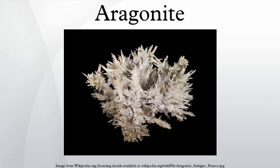Aragonite forms naturally in almost all mollusk shells and as the calcareous endoskeleton of warm and cold water corals. Several serpulid worms have aragonitic tubes. Because the mineral deposition in mollusk shells is strongly biologically controlled, some crystal forms are distinctively different from those of inorganic aragonite. In some mollusks, the entire shell is aragonite.